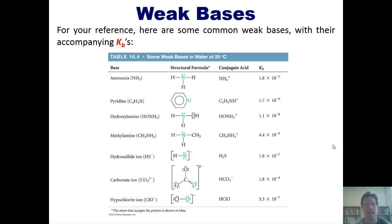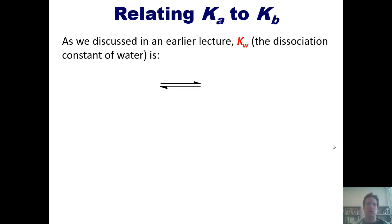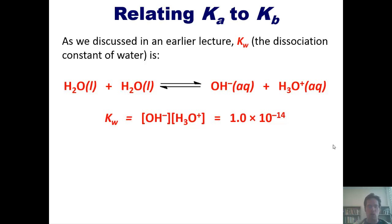So how do Ka and Kb interrelate? Well, as we discussed in an earlier lecture, Kw, which is the dissociation constant of water, which is constantly doing this in an equilibrium setting in real life, happens to be equal to the concentration of hydroxide multiplied by the concentration of hydronium. And, numerically, it equals 1 times 10 to the negative 14th, at least at 25 degrees C, which is roughly room temperature. Interestingly enough, Ka times Kb always equals Kw. So that's an important equation that you should remember or take note of for a problem I'll show you later on.